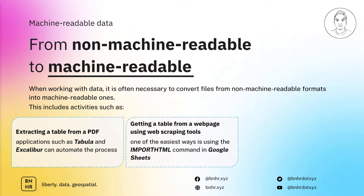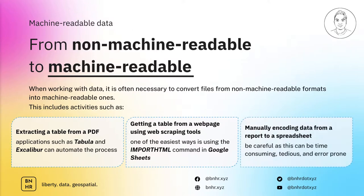You might also need to get a table from a web page using web scraping tools. One of the easiest ways to do this is using the importHTML command in Google Sheets, but there are other more advanced ways, such as using web scraping tools and libraries like Beautiful Soup in Python. And of course, we can't forget about manually encoding data from a report or a document into a spreadsheet. Even in a world that's full of automation, this happens more often than you might think. When doing manual encoding or digitizing of data, we have to be very careful as this isn't only time-consuming and tedious, but it's also error-prone.